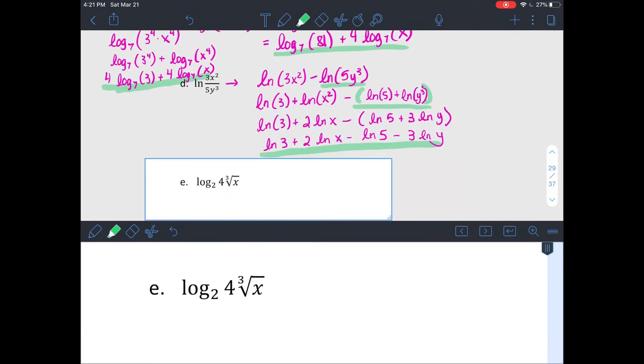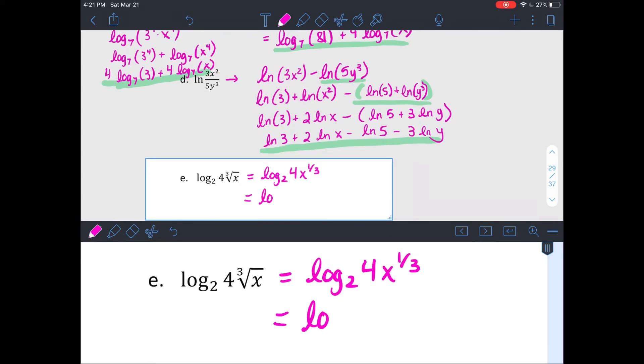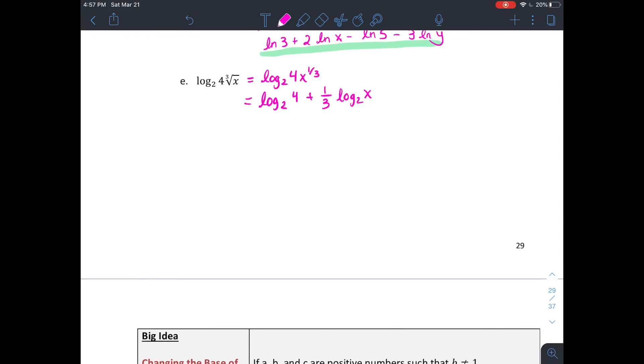This one, you just want to switch that cube root into a 1 3rd power. If you make it log base 2 of 4 times x to the 1 3rd, you could turn it into log base 2 of 4 plus 1 3rd log base 2 of x. Almost forgot, log base 2 of 4 is 2, so I should make it that. And then we are done with that.